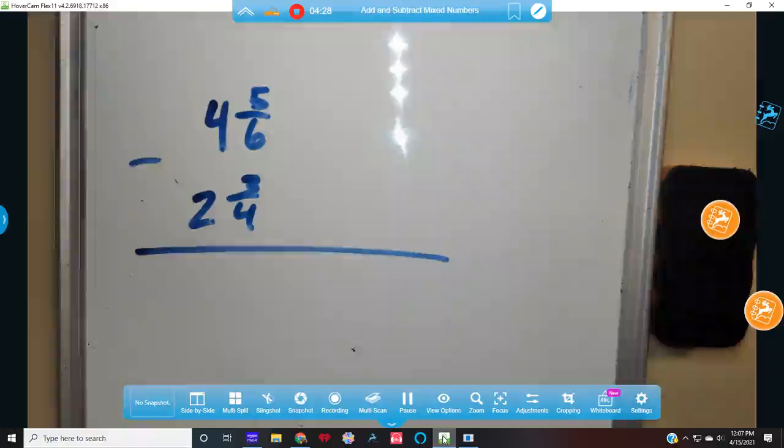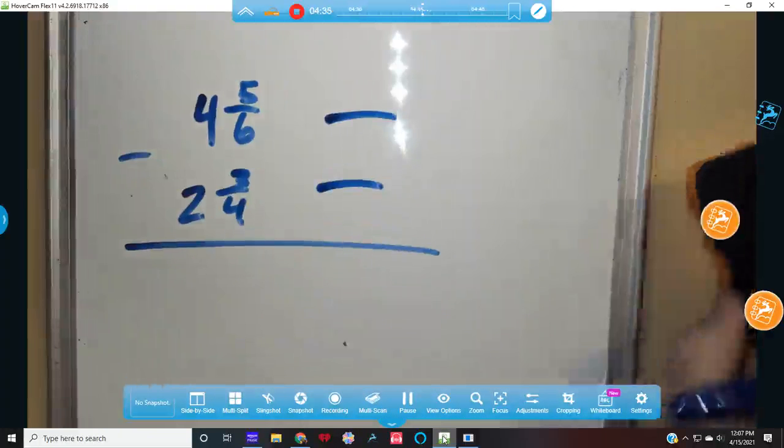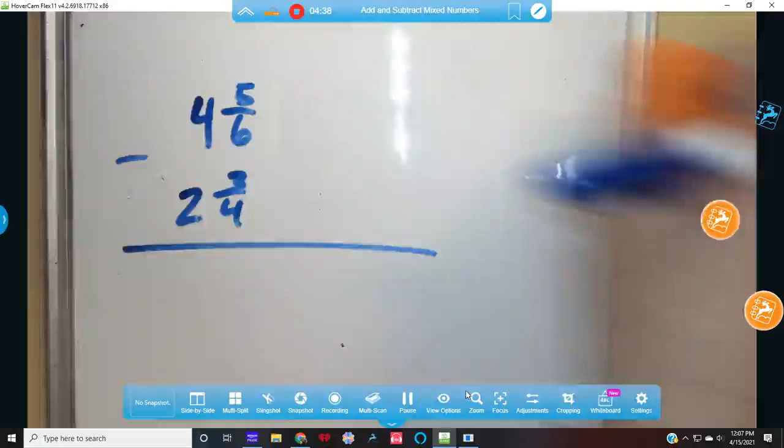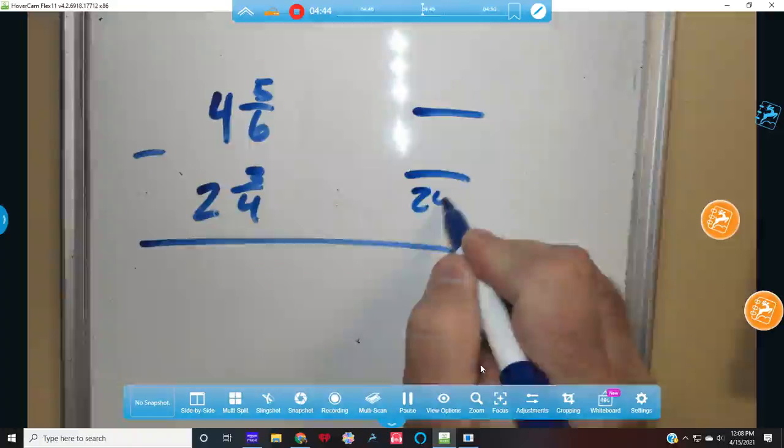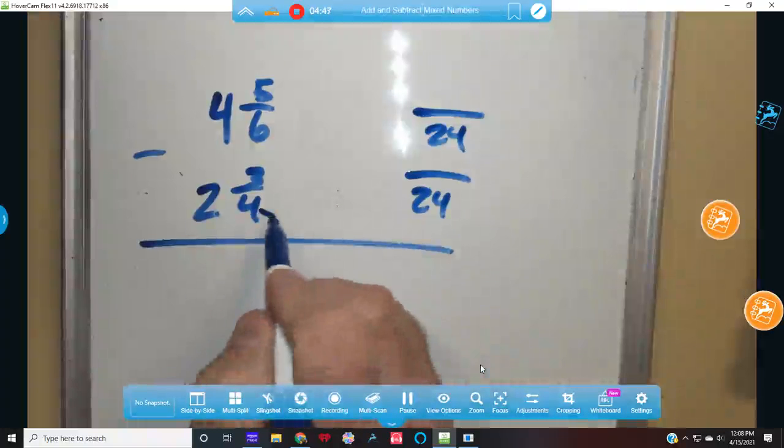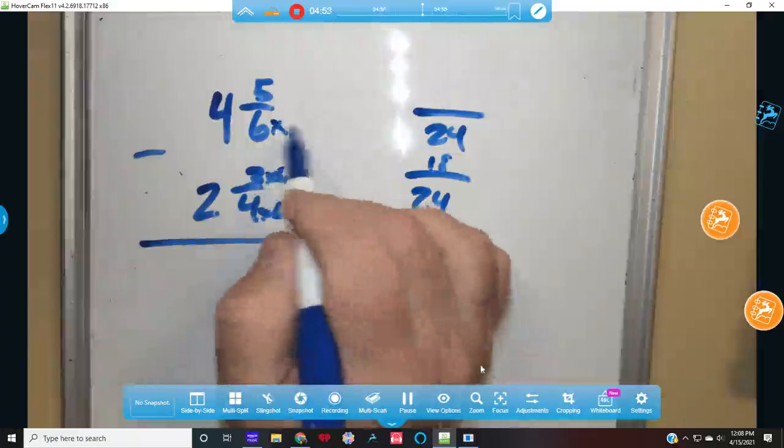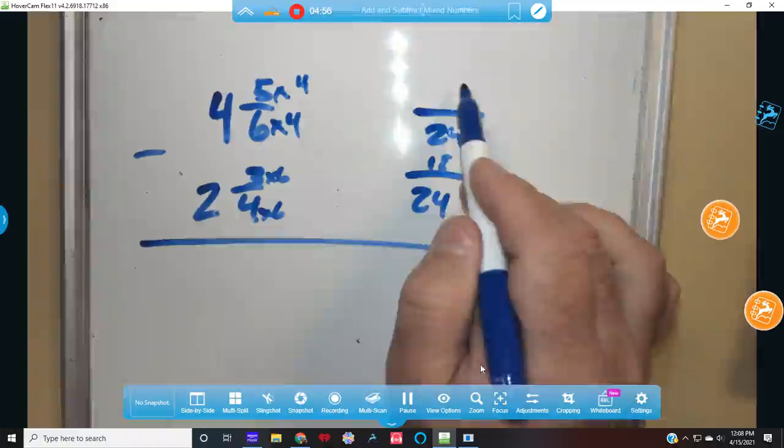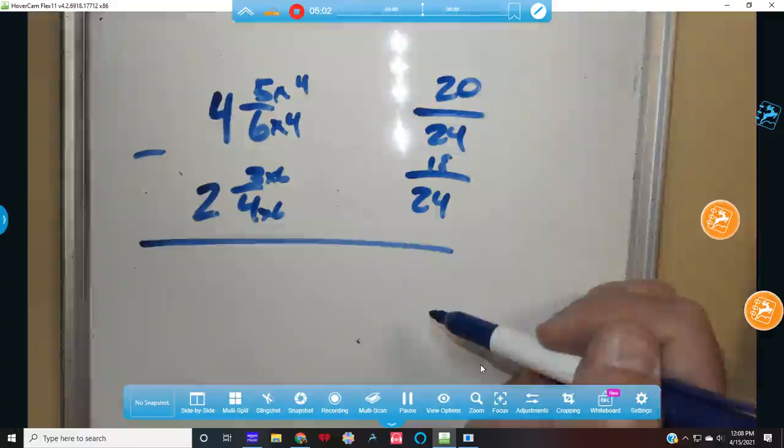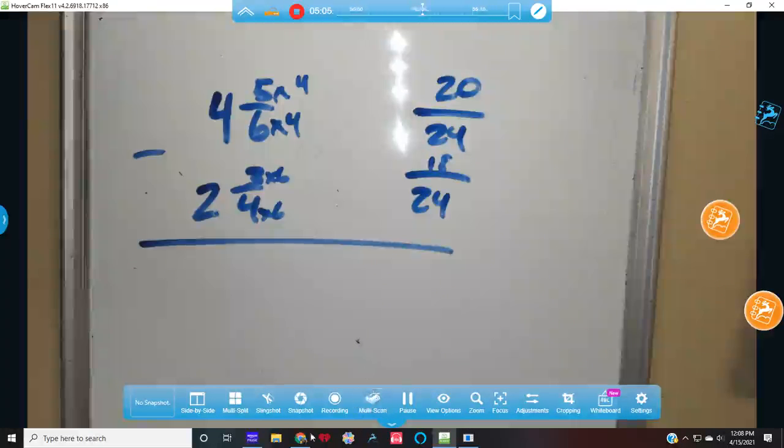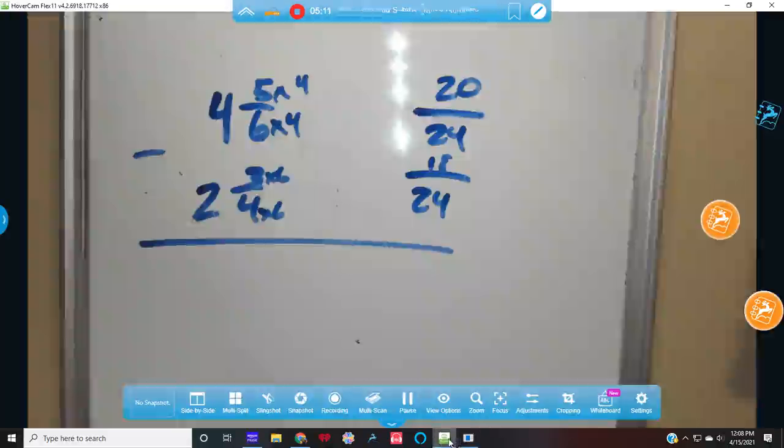So let's check. So I know 6 and 4, I think 24 is the fraction that I want to use. So I had to multiply by 6, so I had to multiply by 6. I get 18. Over here, I get multiplied by 4, so here I had to multiply by 4, and I get 20. Wait a minute, let me see that number again. That's right.